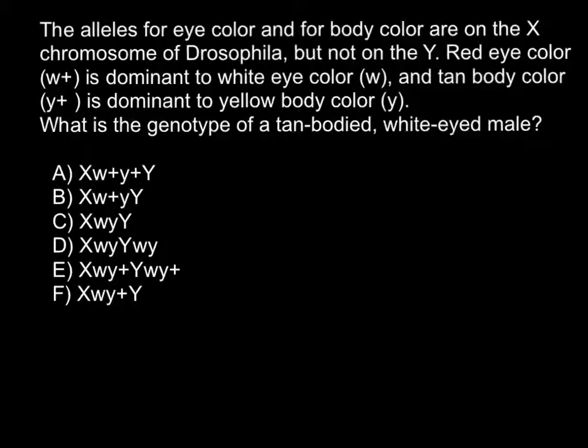The alleles for eye color and body color are on the X chromosome of Drosophila, but not on the Y chromosome. Red eye color, W+, is dominant to white eye color, W, and tan body color, Y+, is dominant to yellow body color, Y. What is the genotype of a tan-bodied, white-eyed male?